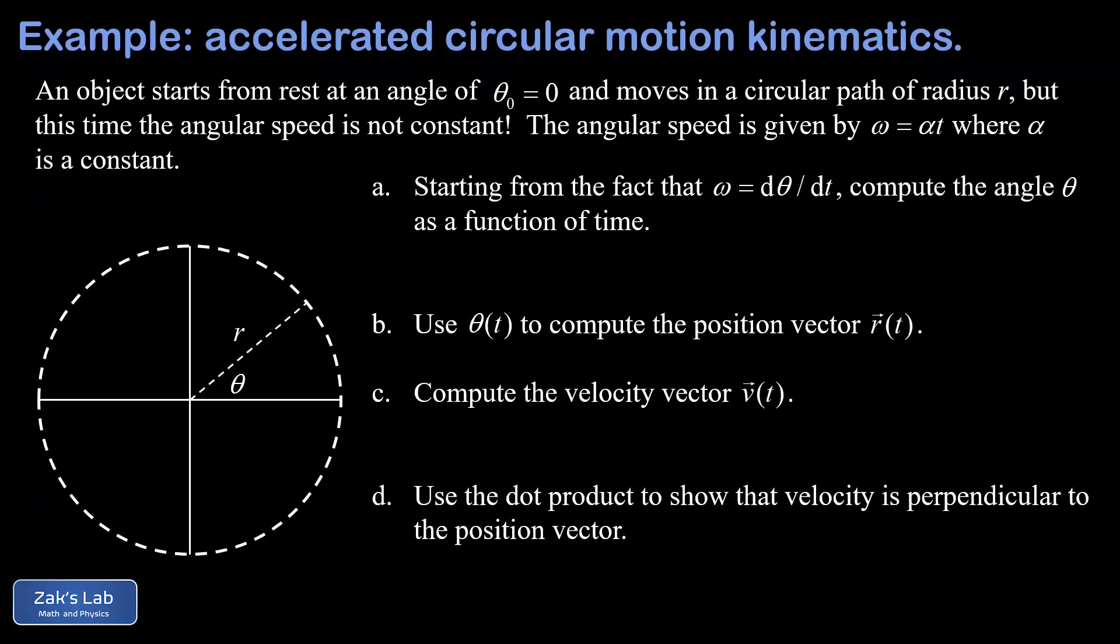In this video, we're deriving the equations of motion for uniformly accelerated circular motion. In other words, we're going to find the position and velocity vectors when our angular speed is constantly changing, so it's proportional to t by a factor of alpha, which we'd ordinarily call the angular acceleration.